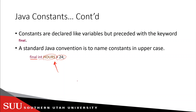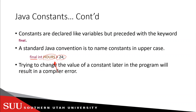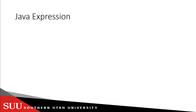You provide the data type, then give it a name and a value using the equal sign. Trying to change the value of a constant later on in the program will result in a compiler error, because you should not try to change any constant in your application. If you want to guarantee that a number won't change, create it as a constant — any attempt to change it will result in a compiler error.